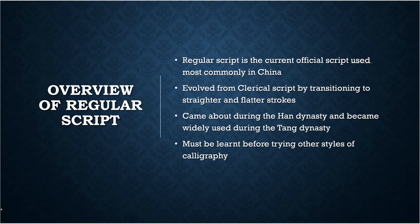Regular script is one of the current official scripts used in China, and it's most commonly seen in items such as textbooks. It officially evolved from clerical script by transitioning from clerical script strokes to the much straighter and flatter strokes that regular script uses today. It came about during the Han dynasty, but it was not until the later Tang dynasty that it was much more widely accepted and used. Regular script is important because it must be learned before you branch off to different styles of Chinese calligraphy, such as seal script or clerical script.